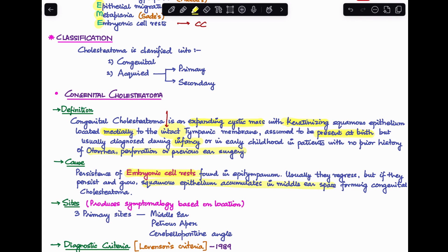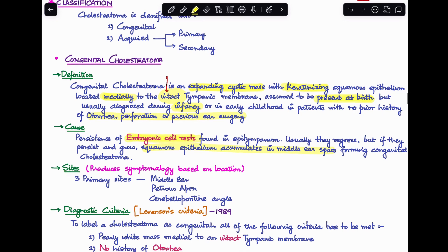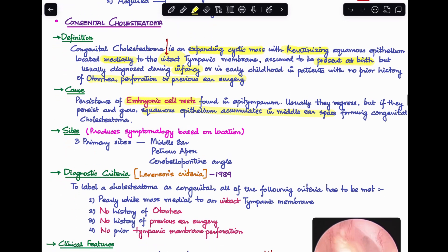You have to know the three common sites where congenital cholesteatoma is commonly seen, because the symptomatology will depend on where it has come from. The three sites are: middle ear, petrous apex, and cerebellopontine angle. The most common is the middle ear.